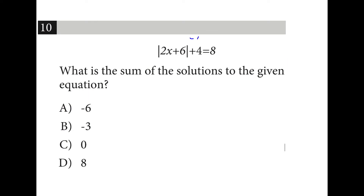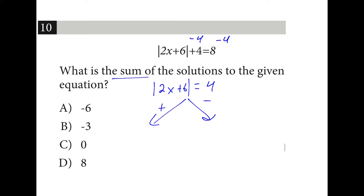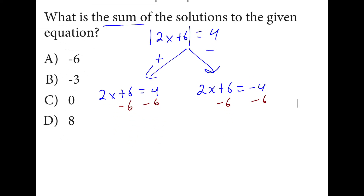First thing we do is subtract 4 from both sides to get the absolute value bracket all by itself. Once we do that, we're going to split into the positive and negative solutions, and then add them together. So we have 2x plus 6 is equal to 4, and 2x plus 6 is equal to negative 4. We'll subtract 6 from every side, so we have 2x is equal to negative 2 and 2x is equal to negative 10. We'll divide everything by 2.